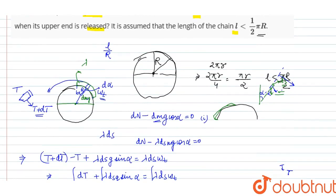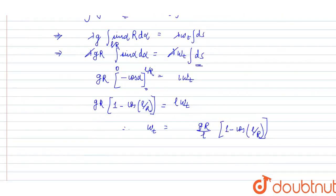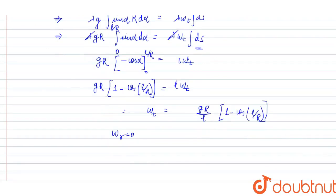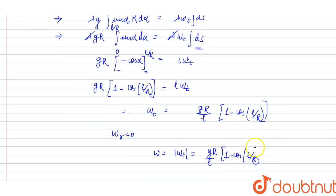Initially, looking at the normal component, since there was no movement in the radial direction, radial acceleration was zero. The tangential acceleration is ωt, which equals g·r/L·(1 - cos(L/r)). Thank you.